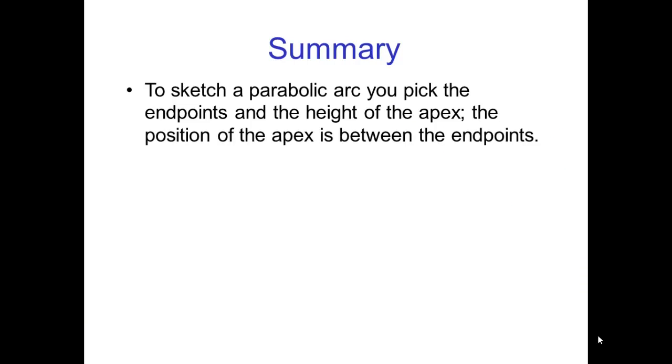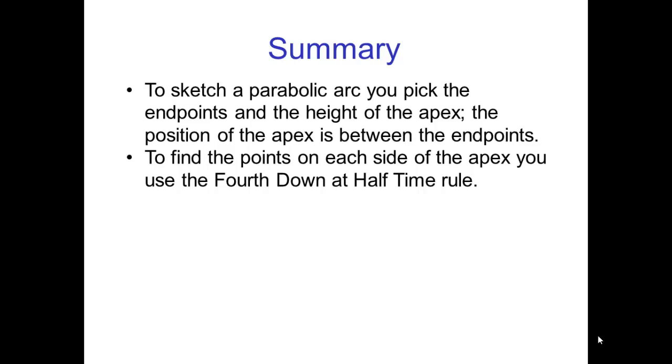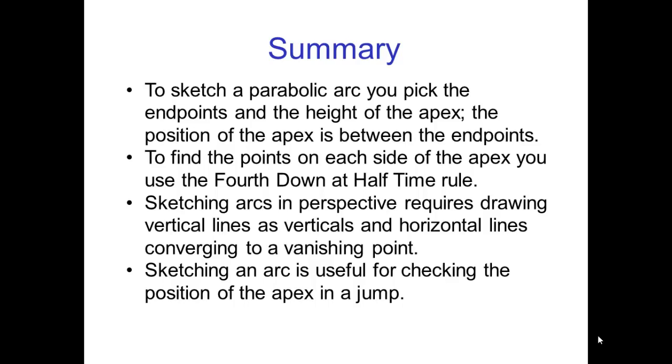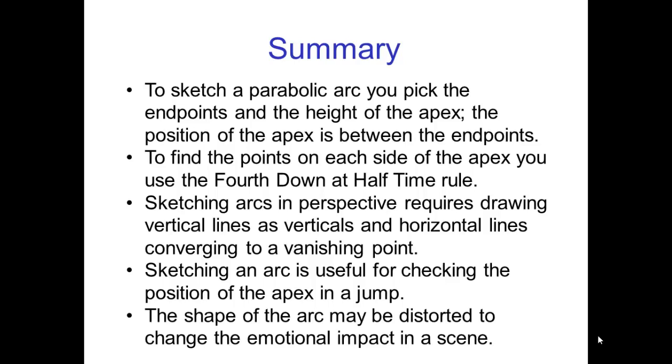So, in summary, to sketch a parabolic arc, you pick the endpoints and the height of the apex. The position of the apex is halfway between the endpoints. To find the points on each side of the apex, you use the fourth down at half time rule. Sketching arcs in perspective requires drawing vertical lines as verticals and horizontal lines converging to a vanishing point. Sketching an arc is useful for checking the position of the apex in a jump. And finally, the shape of the arc may be distorted to change the emotional impact of a scene.